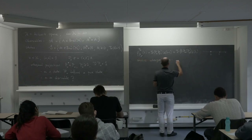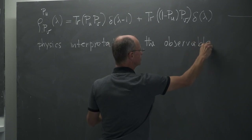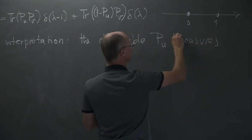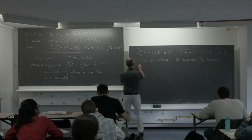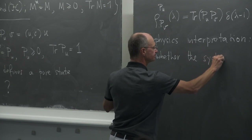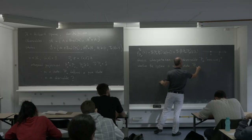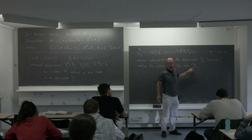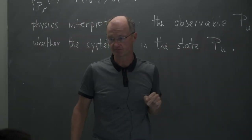The physics interpretation: the observable given by the projection P_u measures — in whatever sense this word means in physics — whether the system is in the state P_u. That is the funny thing: we use the same orthogonal projection on the same one-dimensional space in two capacities.